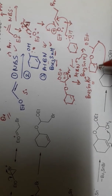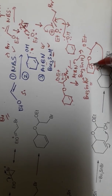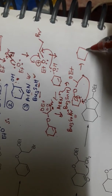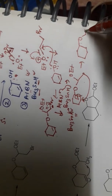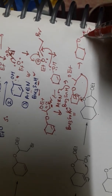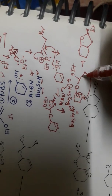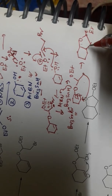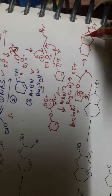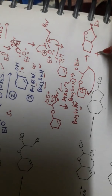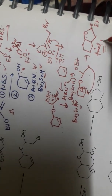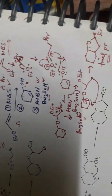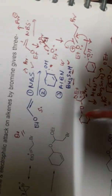The free radical then attacks this double bond, and the double bond shifts onto the adjacent carbon. Because one carbon closes back, the final structure formed is a five-membered ring, which is the final product.